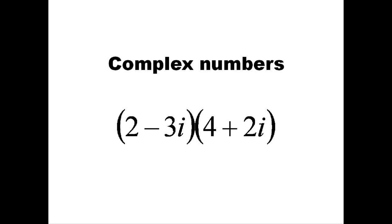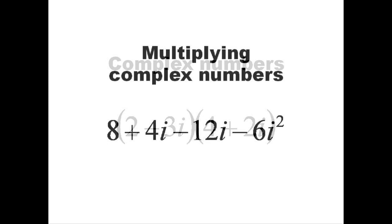Let's say we are asked to multiply these two complex numbers together. By multiplying the first, outer, inner, and last terms, or foiling, we get a plus 4i minus 12i minus 6i squared.